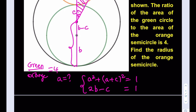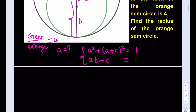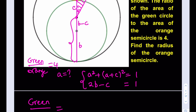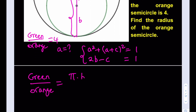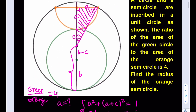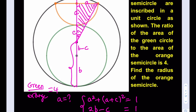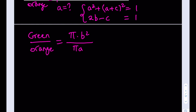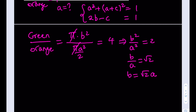They're giving us the ratio, so let's go ahead and write that down. What is the green to orange ratio? The area of the green circle, since the radius is B, is pi times B squared. The area of the orange semicircle, since the radius is A, is half of pi A squared, because this is a semicircle. Green to orange ratio is given as 4. Pi cancels out. Dividing both sides by 2, we get B squared over A squared is equal to 2, meaning B over A is root 2, which means B is equal to root 2 times A. Since we're looking for A, it makes sense to write B in terms of A.